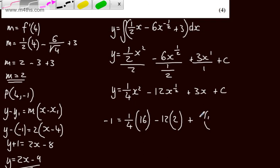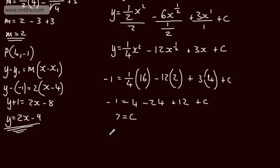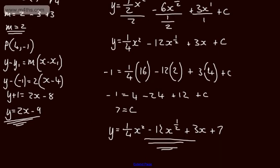So from this we can go ahead now and solve for c. So we've got now minus 1 equals 4 minus 24 plus 12 plus c. So from this now we can see that c is going to be equal to 7. So just write in the final answer, y equals 1 quarter x squared minus 12x to the positive one half, or the root of x, plus 3x plus 7. So final answer for 4 marks. A couple of different ways you can do that and write it, but this should be the final answer.